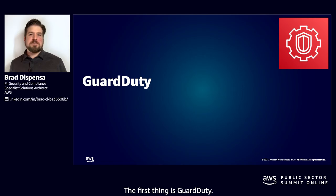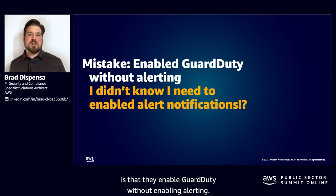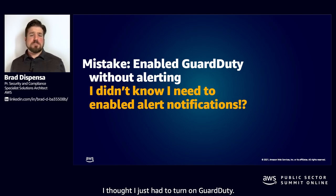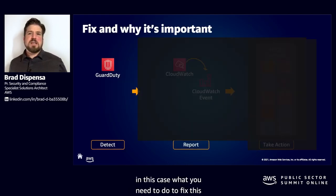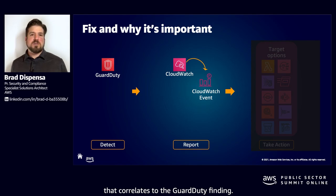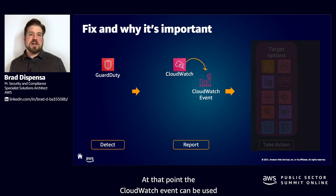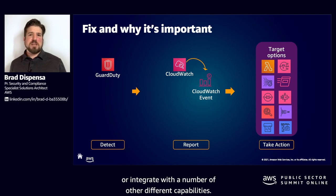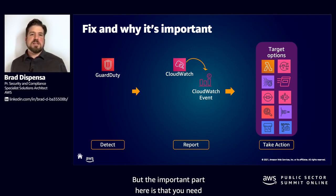The first thing is GuardDuty. The mistake I often see customers make is that they enable GuardDuty without enabling alerting. They didn't know they needed to actually enable alerting — they thought they just had to turn on GuardDuty. The fix is pretty simple: go into CloudWatch and create a CloudWatch event that correlates to the GuardDuty finding. That CloudWatch event can then trigger things like a Lambda function, or use an SNS topic notification, or integrate with other capabilities. The important part is that you need to take the GuardDuty alert and do something with it.